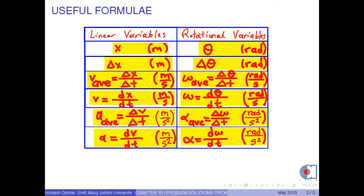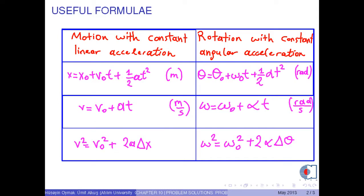As a next topic, let's establish the analogy between motion with constant linear acceleration and rotation with constant angular acceleration, as shown in this table. Angular position or angle is found by this formula, where theta_0 is the initial angle, omega_0 is the initial angular speed, and alpha is the constant angular acceleration. Angular speed is found by this formula, or if time is not given, we use this formula to find angular speed.